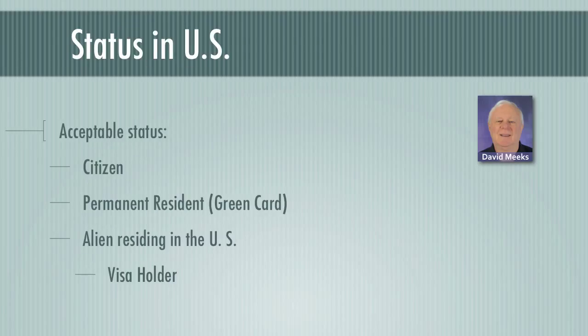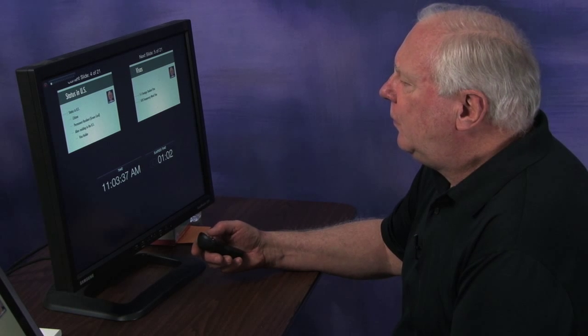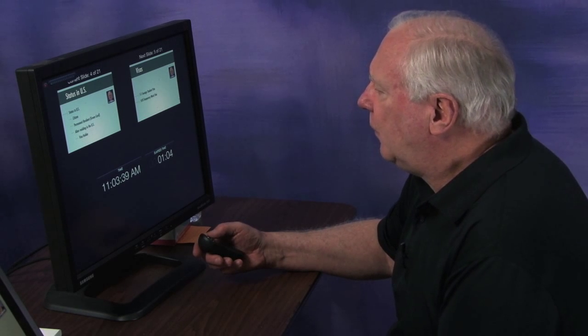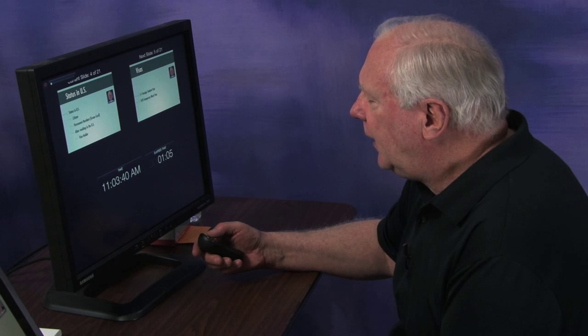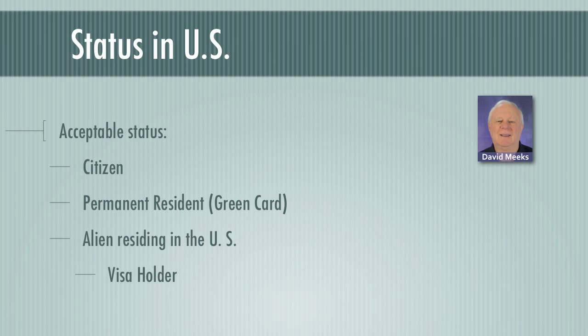Relating to your status in the US: you may be a citizen, in which case you qualify under this part. If you are a permanent resident with a green card, you also qualify. And your status may be an alien residing in the US, which would be a person that holds a visa to be in this country.